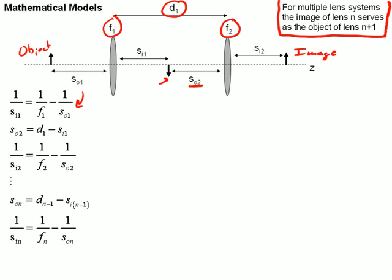So we do that by simply realizing that this distance here, SO2, is simply the spacing between the lenses, D1, subtracted by the image distance here. Or the object distance is D1 minus the image distance. We plug that in, we can calculate the image distance, and we can continue with this iterative procedure for as many lenses as we have in an optical system.